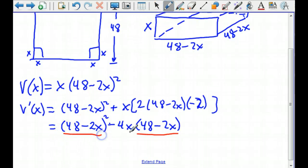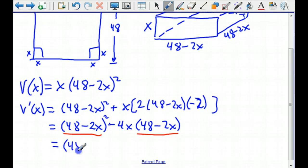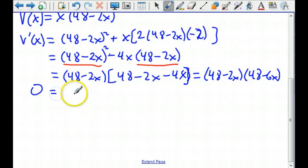I have a 48 minus 2x squared and a 48 minus 2x to the first. So we'll go ahead and factor that out. I'm going to get 48 minus 2x minus 4x. So my derivative in factored form is 48 minus 2x times 48 minus 6x. We're going to set that equal to 0 because we want to maximize it. I'm going to get that x is either 24 or 8.